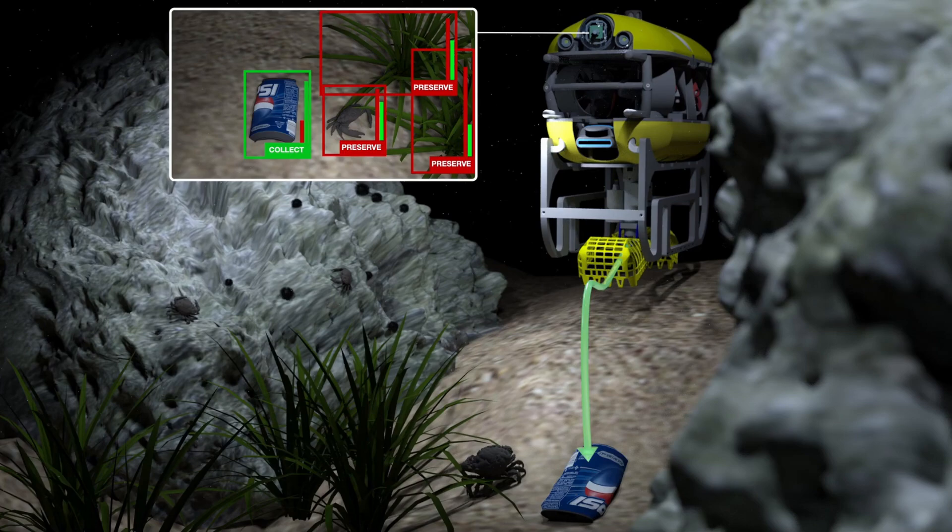First of all, the robot is already challenging to control due to the hydrodynamics involved. But we also need to make sure that the approach is robust against disturbances like currents, as we can see in this video.